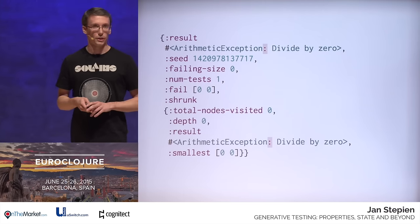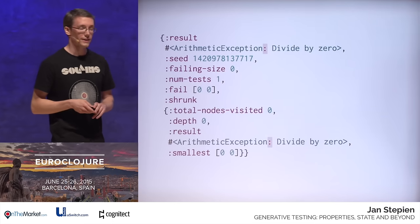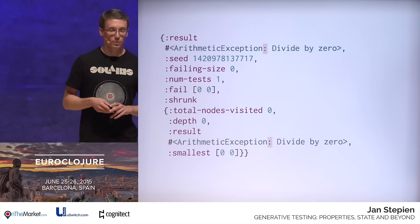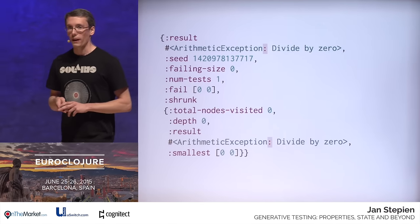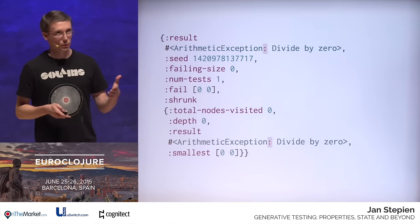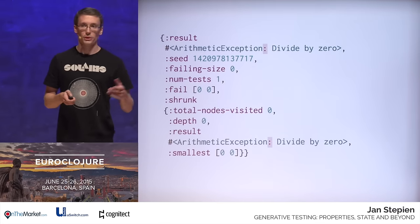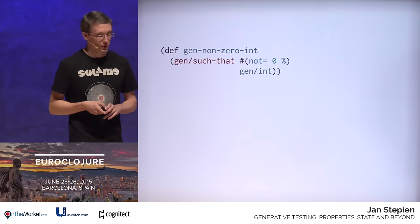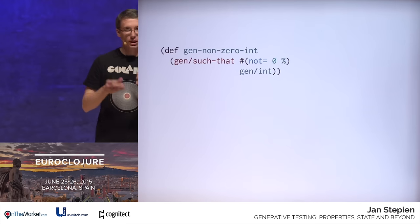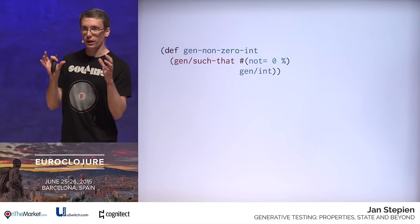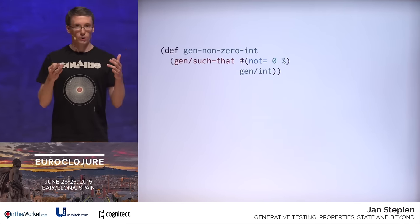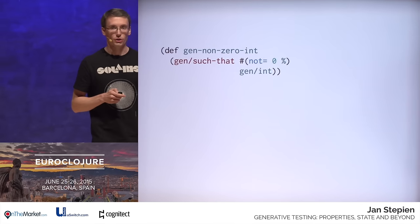Arithmetic exception: divide by zero. Indeed, we never said that B cannot be zero. So we need to fix our property — we need to exclude zero from the possible values of B. In order to do this, we will use the `such-that` combinator, which behaves just like the filter function. Given a predicate, it generates a new generator of values which match the predicate.